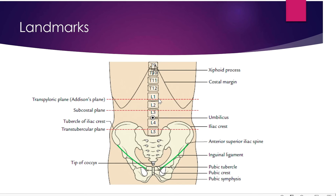Coming to the subcostal plane: this is an imaginary horizontal plane passing just below the costal margin. The lowermost rib coming anteriorly is the 10th rib, and posteriorly the vertebral level is L3. So the subcostal plane corresponds to L3, the 10th rib, and the lower margin of the costal margin.